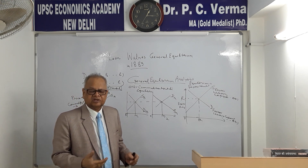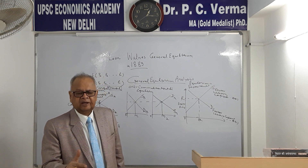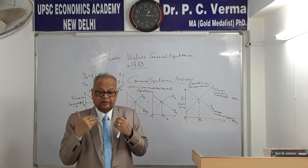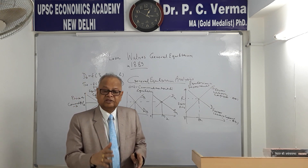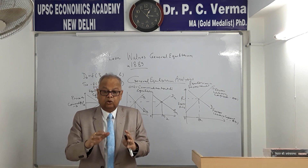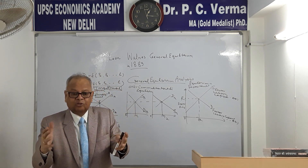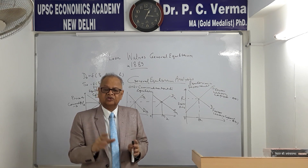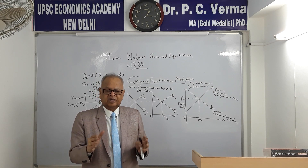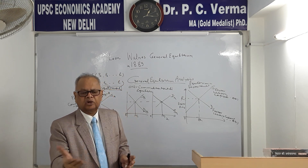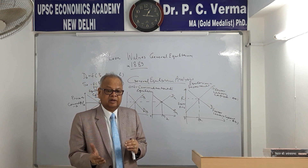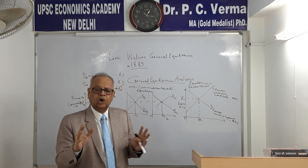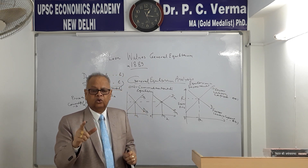Classical economists say that supply equals demand — whatever is supplied to the market, the market is cleared. That means there will be no surplus, no unemployment. As J.B. Say argued, all markets will tend to be in equilibrium. In the long run, equilibrium will be obtained and that equilibrium is known as general equilibrium.